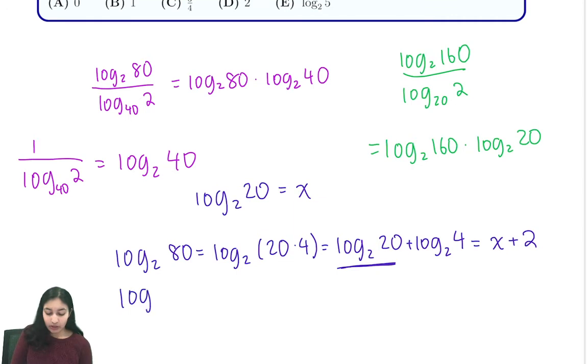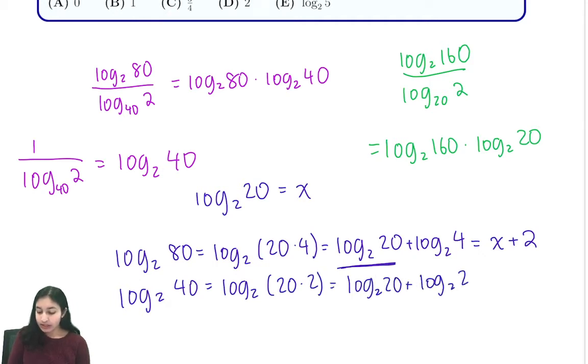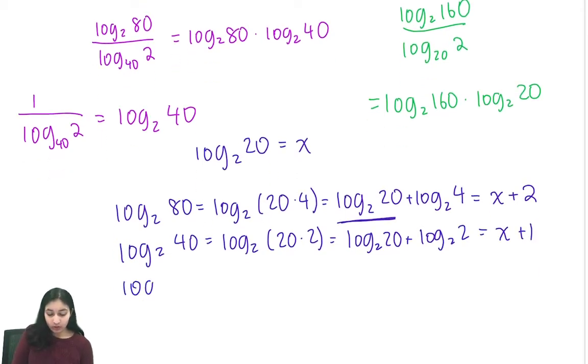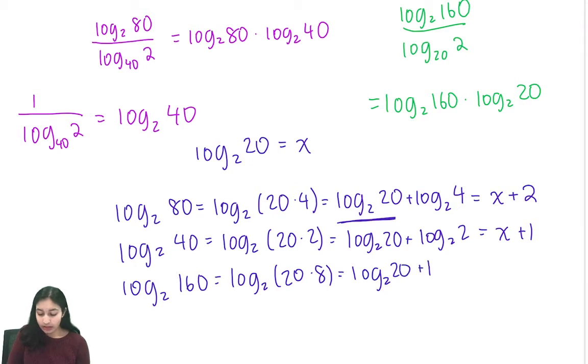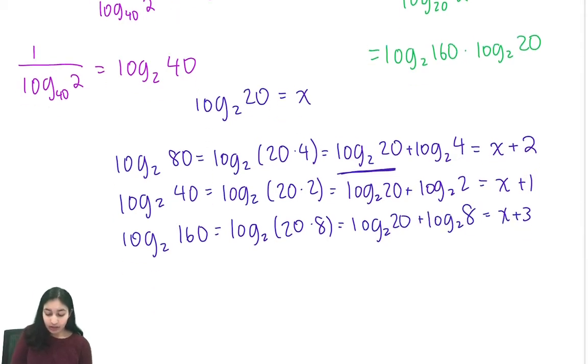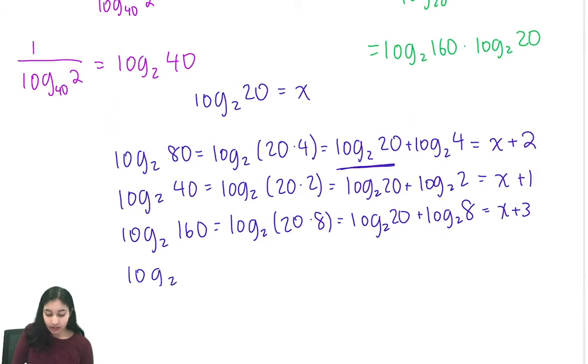We can rewrite our other expressions as well. Log base 2 of 40 is log base 2 of 20 times 2, which is log base 2 of 20 plus log base 2 of 2. So this is x plus 1. Log base 2 of 160 is log base 2 of 20 times 8. So it's log base 2 of 20 plus log base 2 of 8, which is x plus 3. And finally, log base 2 of 20 is just x.